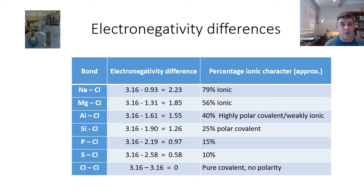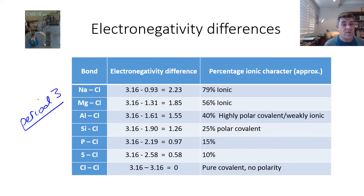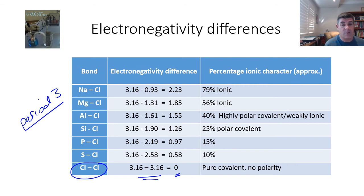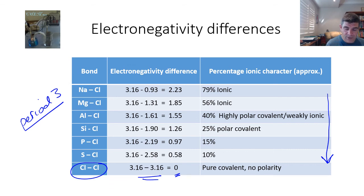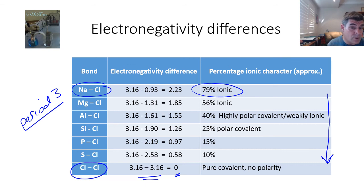To quickly illustrate this, here's a table moving along period three, looking at how each element combines with chlorine. At the bottom, chlorine and chlorine have exactly the same electronegativity values — a difference of zero — giving a pure covalent bond. As we go across the period, the ionic nature with chlorine decreases until we reach zero, with sodium chloride being the most ionic. Notice that even the ionic nature of the sodium chloride bond isn't 100%. These are relative bonding strengths, and we'll look at these in more detail in future videos. Thanks for watching.